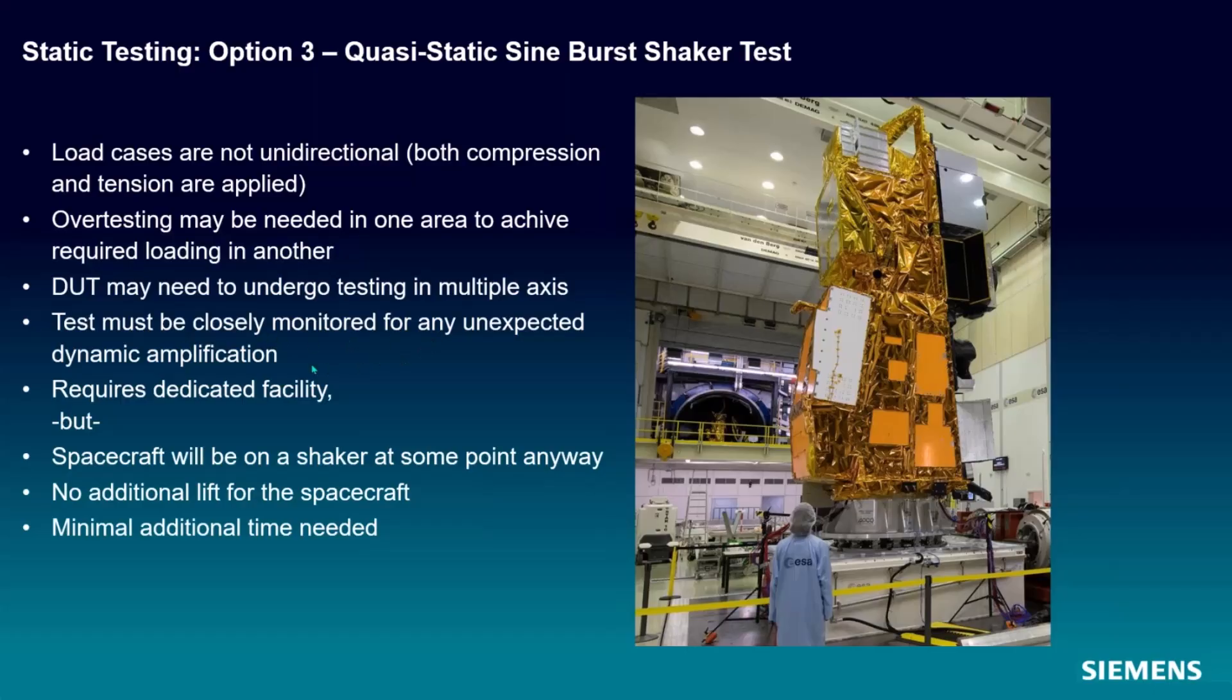You might get some dynamic amplification. We'll talk about that in a little bit. But the idea with this quasi-static test is we're well below the first mode of the test article. And so we don't get any resonant amplification. All that being said, the spacecraft is always going to be on a shaker at some point anyway. So it's one less thing that you have to do to reorient the spacecraft. So there's no additional lift. It's tucked in with this other kind of dynamic testing that we're doing.